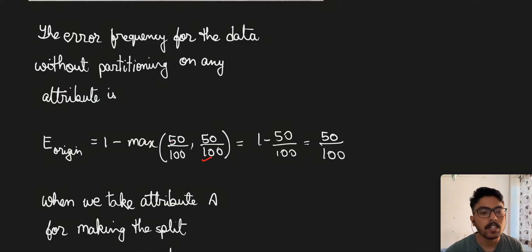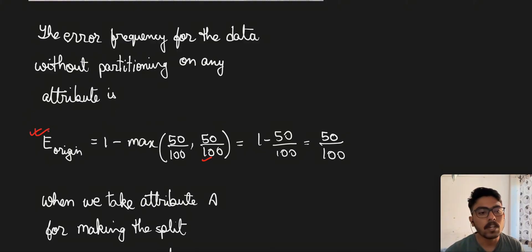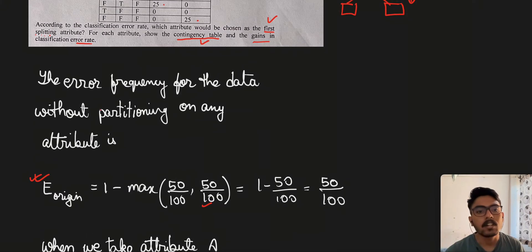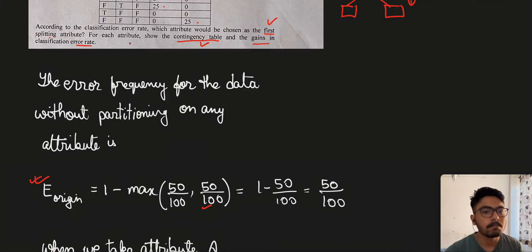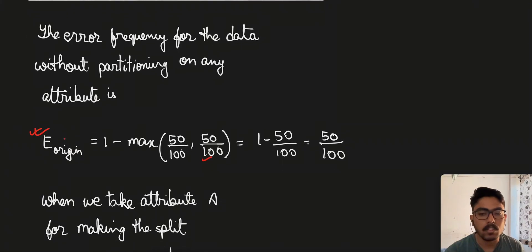So 100 will be in the denominator. For both classes we calculate the maximum: 1 minus max of both classes gives us 1 minus 50/100, which is 50/100. We need to calculate the error rate using the original data set without partitioning.